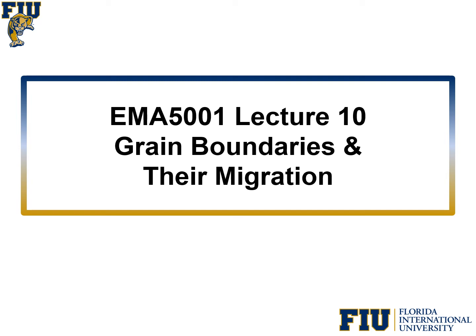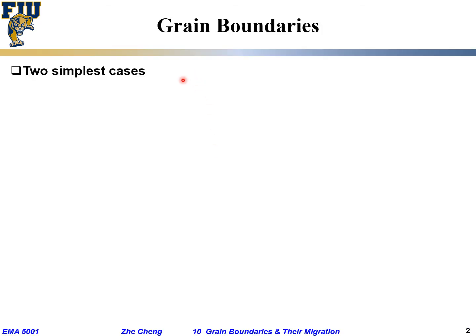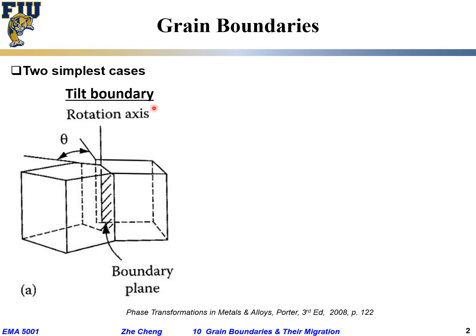We will also discuss the migration or motion of grain boundaries driven by different factors. When we talk about grain boundaries, we have two simplest cases. The first one is called a tilt boundary, as we illustrate here. We have two individual grains, and those grains have one major direction parallel but not overlapping. One grain is rotated or tilted away from the other by a certain angle, but the low-index directions are still parallel. This is the type of grain boundary we call a tilt boundary.